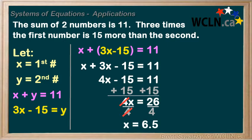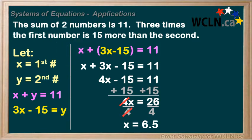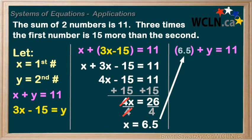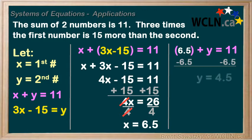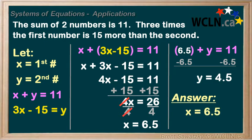We divide by 4, and we have x equals 6.5. Looking back at our let statement, x is our first number. We still need to solve for our second number, y. Plugging in 6.5 for x into our first equation, y equals 11 minus 6.5, or 4.5. Our overall solution is x, or our first number, is 6.5, and y, or our second number, is 4.5.